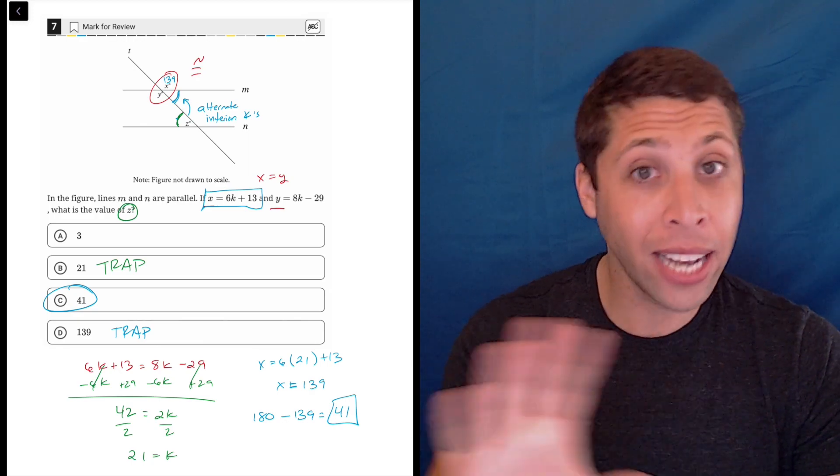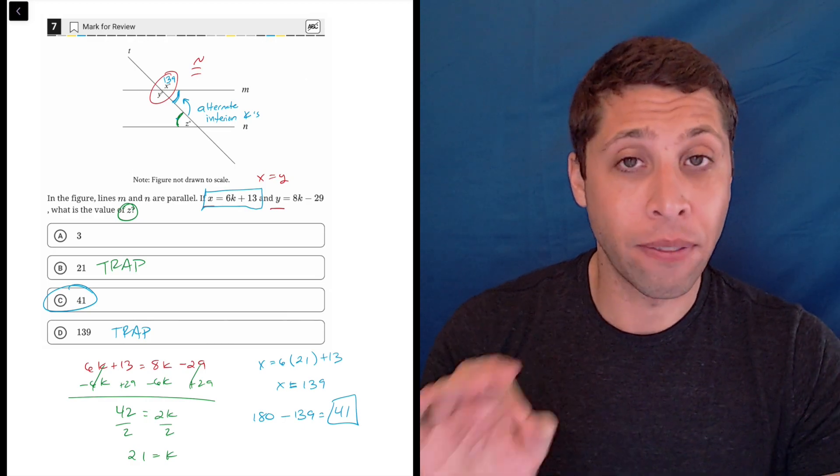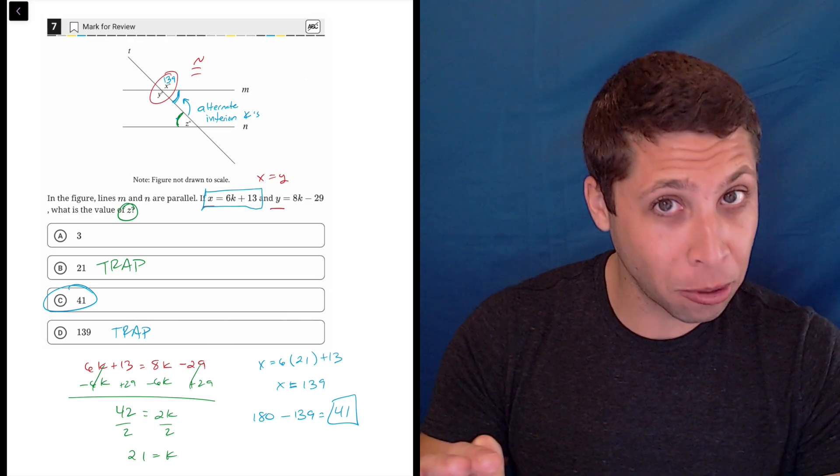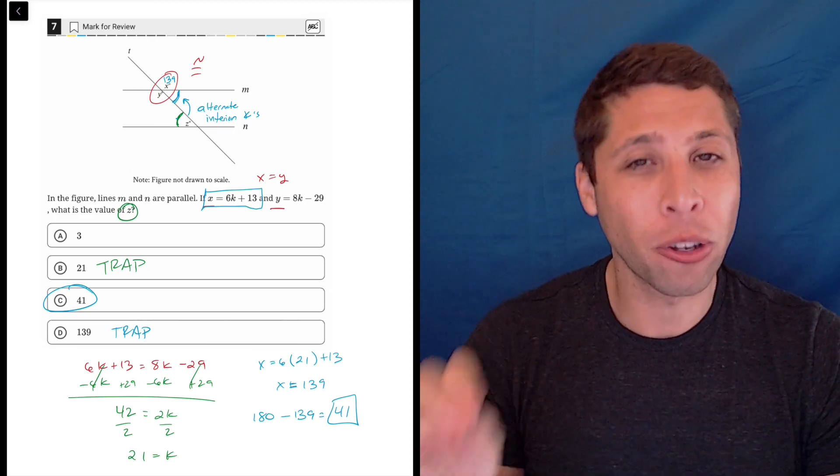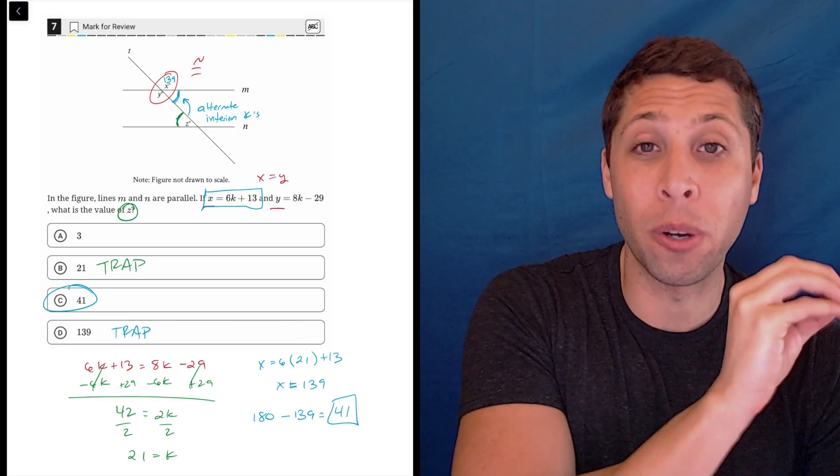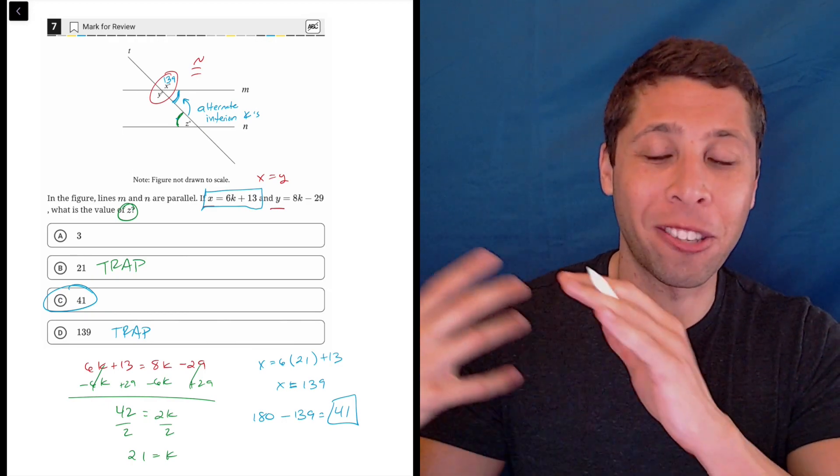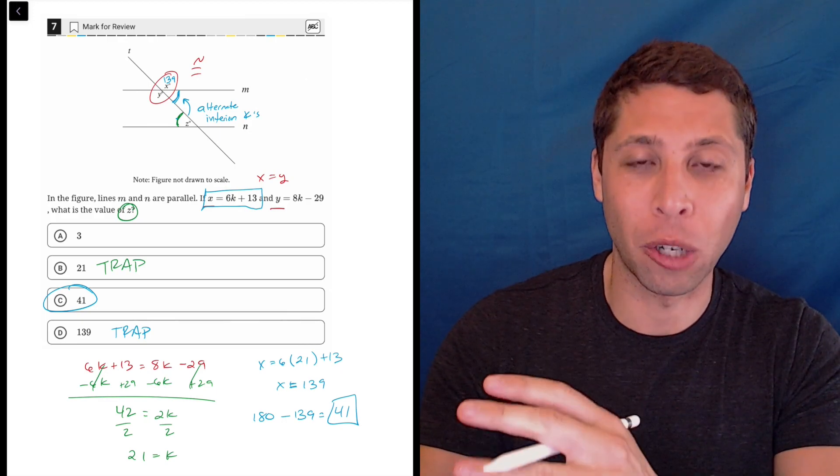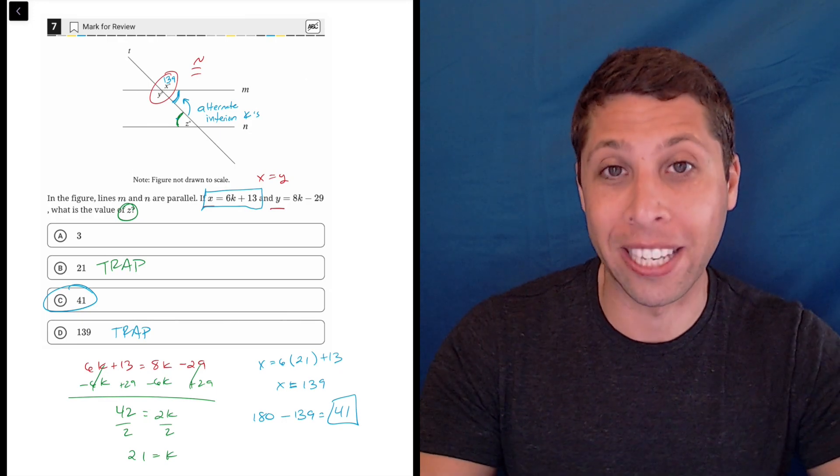Just be careful that with any geometry question, you're always aware of what they're asking for. They very often do this where with geometry, there's something that you solve for, but then there's also something different that they want you to be the answer. So just be careful that if those don't overlap, that you're not just picking the first number that kind of pops out of an equation, that you're actually thinking about what they want and you're doing whatever extra steps you need to get there.